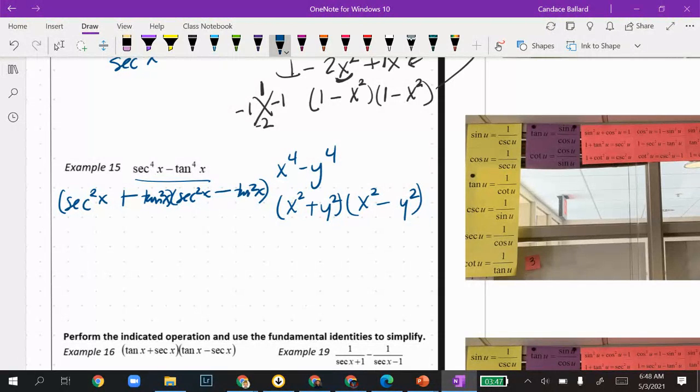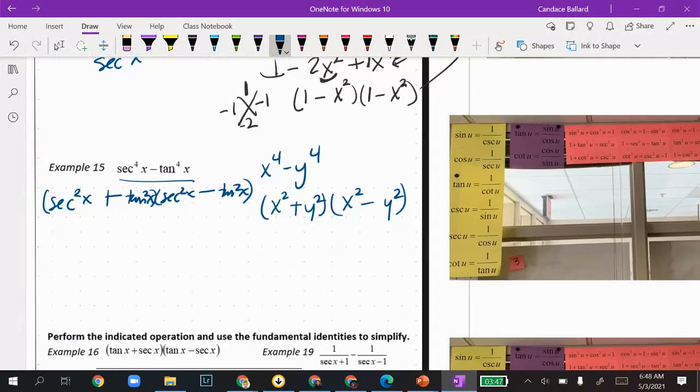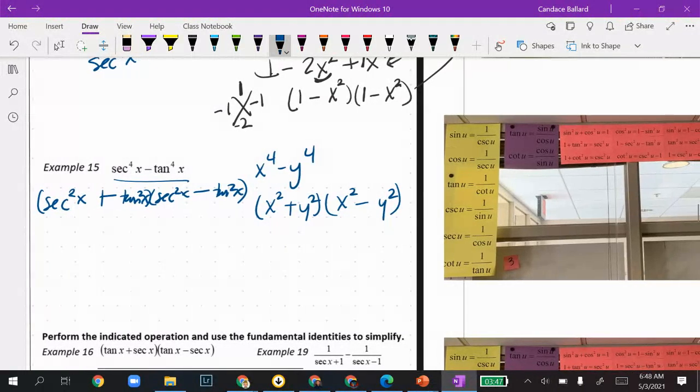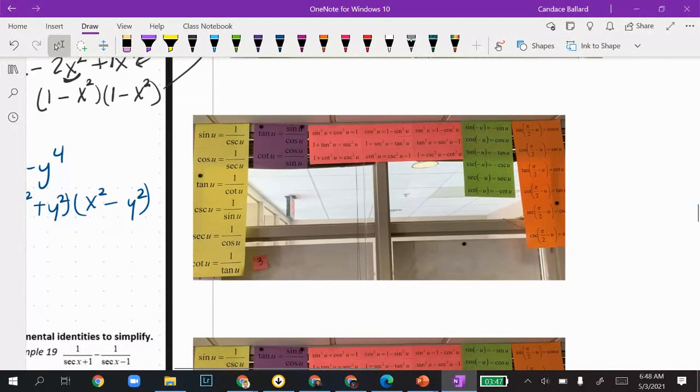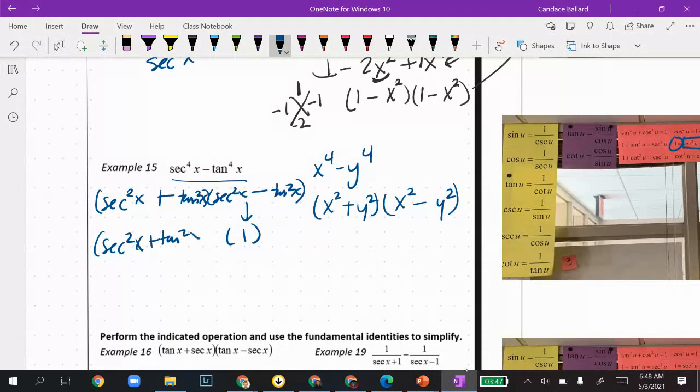Now, the question is, how can I simplify this a little bit? I'm going to look at my Pythagorean identities to see if I can find secant squared plus tangent or secant squared minus tangent. I am noticing secant squared minus tangent is right there, and I can substitute 1 in for it. So this piece gets a 1, and this just gets secant squared plus tangent squared x. And so if I simplify that, I just have secant squared x plus tangent squared x.